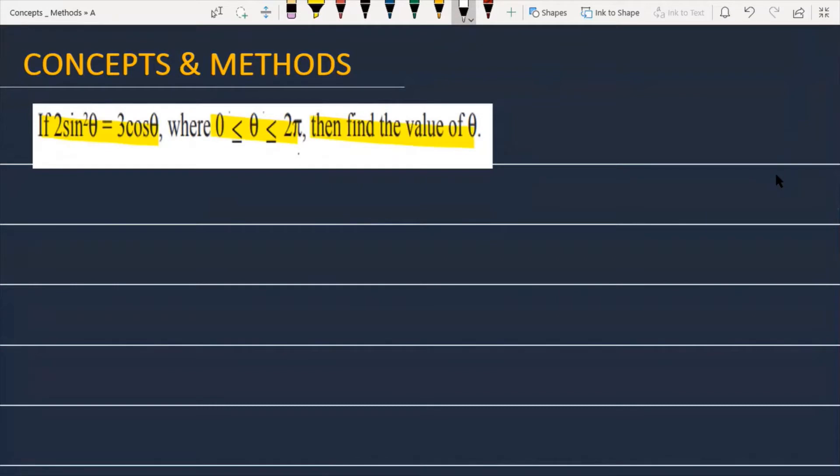Let's see how we will solve this problem. First of all, I will note the question data. The question is: it is provided 2sin²θ equals 3cosθ.